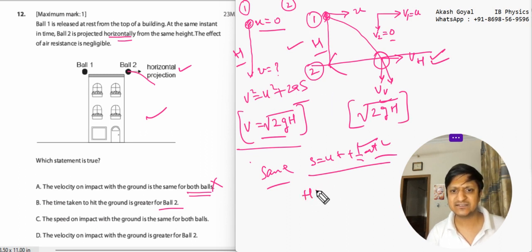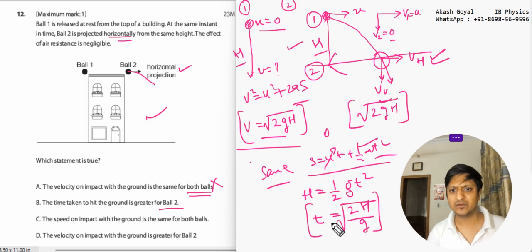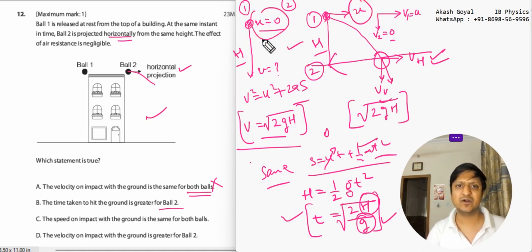Like s is x, u is 0, and you are left with half gt squared. So t will be root 2h by g. The time depends upon the height and the gravitational force that would be acting. It doesn't depend upon the velocity and other parameters.